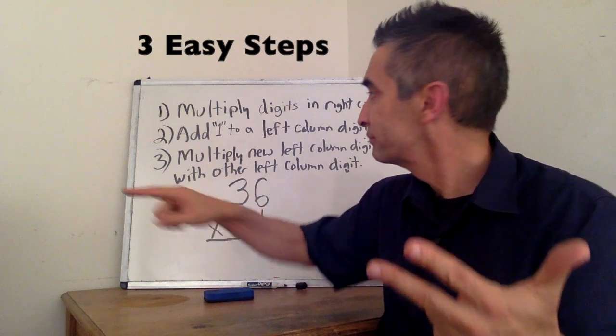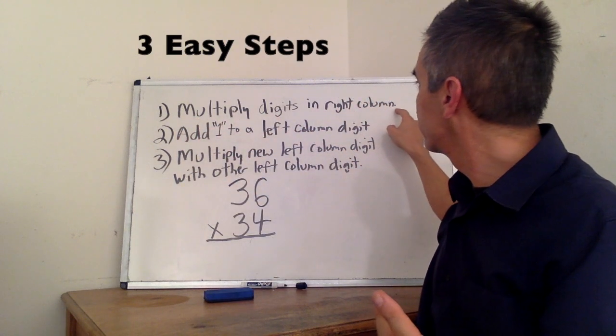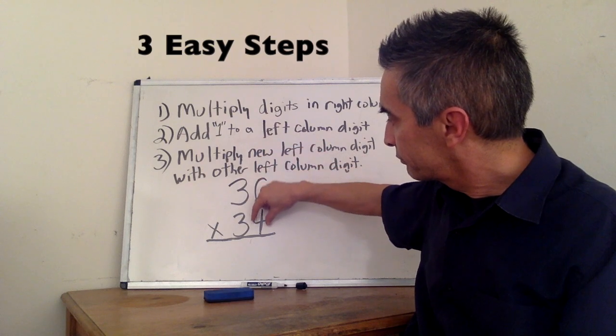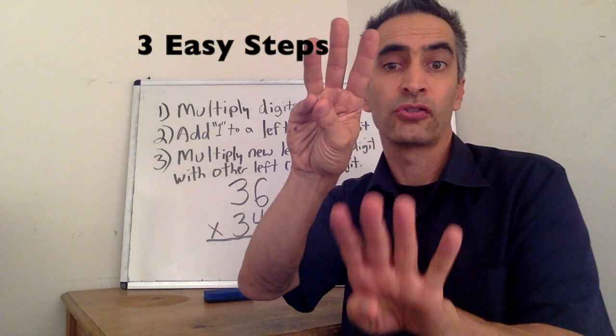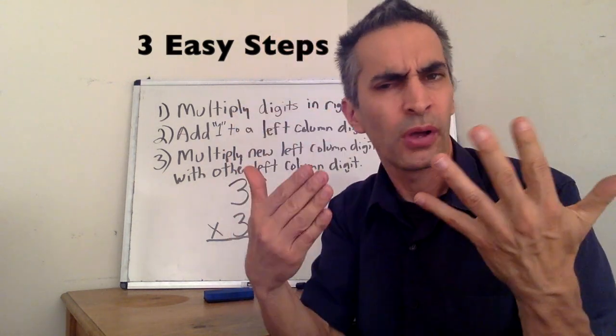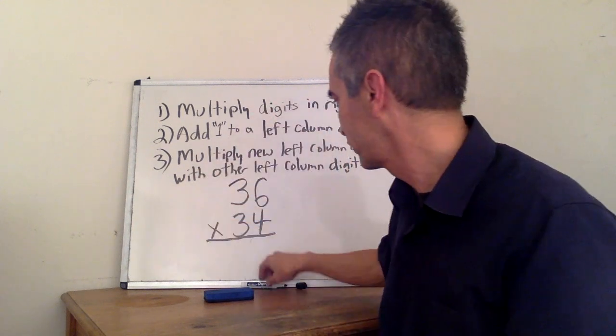First step: multiply digits in the right column. 6 and 4 multiply to equal 24.